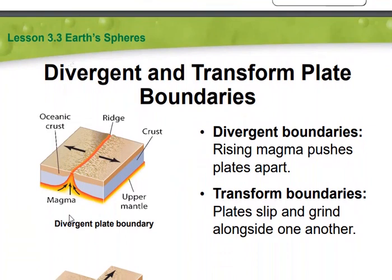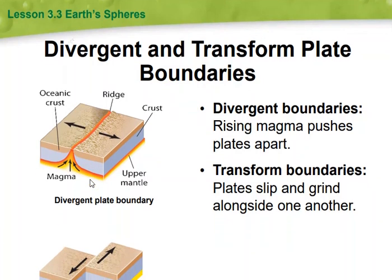At divergent plate boundaries, magma — also known as molten rock — surges upward to the surface and pushes plates apart. This is why they're called divergent, and it creates new crust as it cools. You can see in the diagram that the plates are separating. A prime example is the Mid-Atlantic Ridge, which is part of a 74,000-kilometer system that cuts across the ocean floor. Plates expanding outward from divergent boundaries bump against other plates, forming transform or convergent plate boundaries.